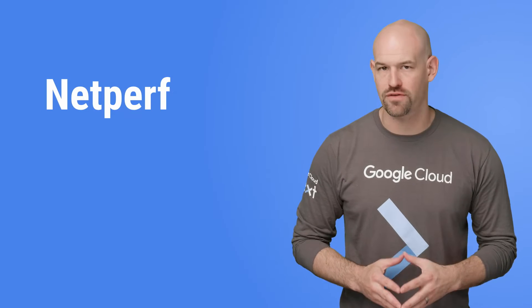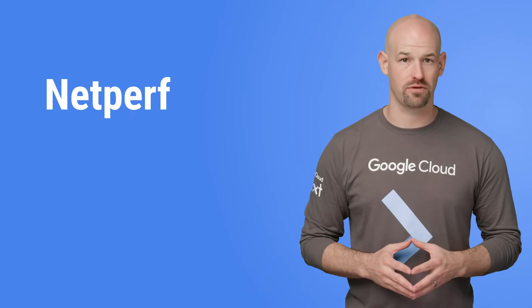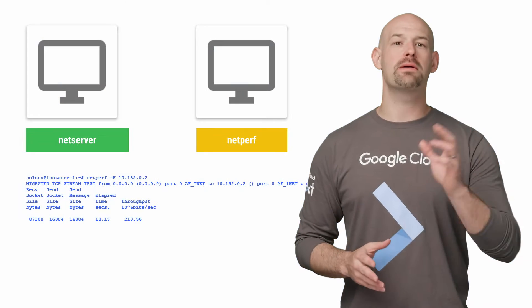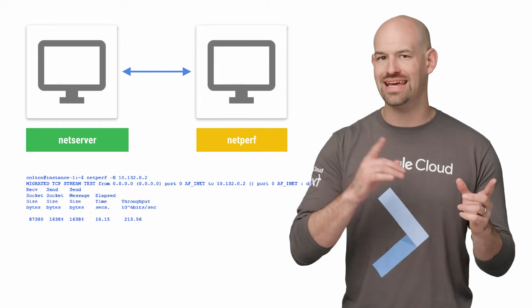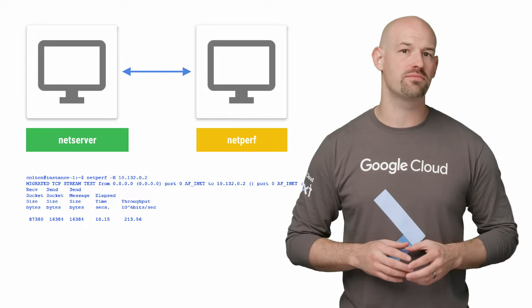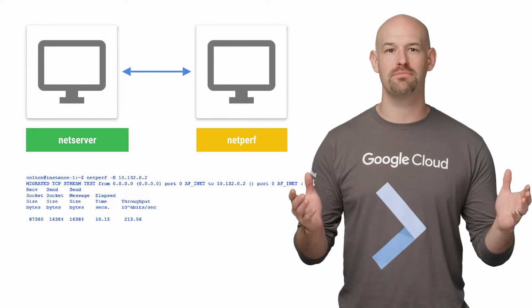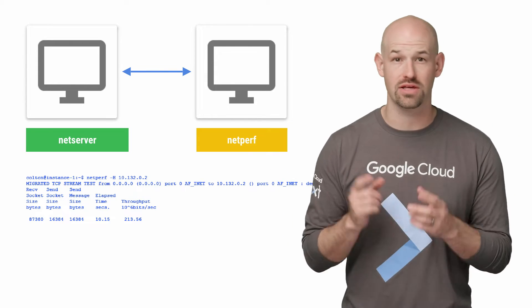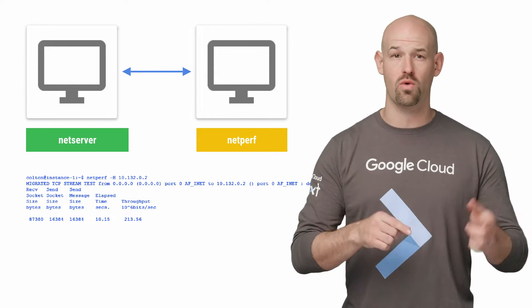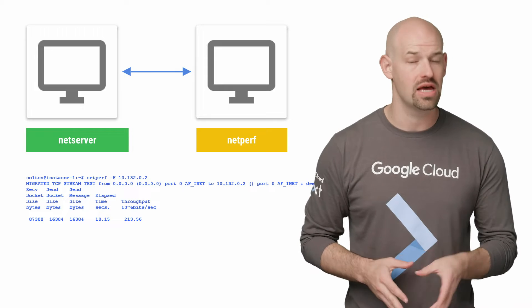First is NetPerf, which is a commonly used tool for measuring maximum TCP and UDP bandwidth performance. NetPerf works by hosting a server and a client on different machines and can measure the throughput between the two ends, either unidirectionally or bidirectionally.